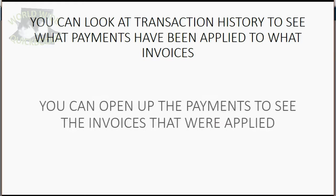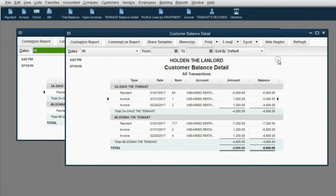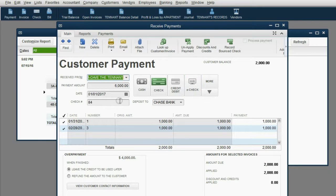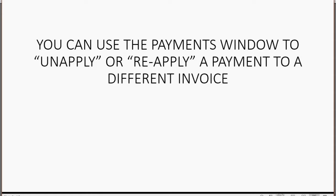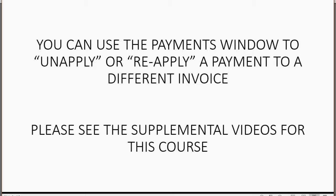You can also find which invoices were applied to which payments by opening the payment itself. Go back to the customer balance detail and double-click the actual payment — at the bottom of the payment window, the invoices that this payment is applied to will be listed. If you ever apply a payment to the wrong invoice, you can use the payments window to unapply or reapply it to a different invoice. Please see the supplemental videos provided as part of this playlist for this course.